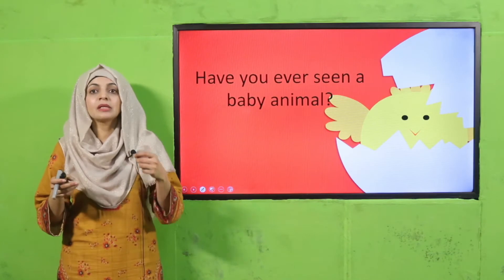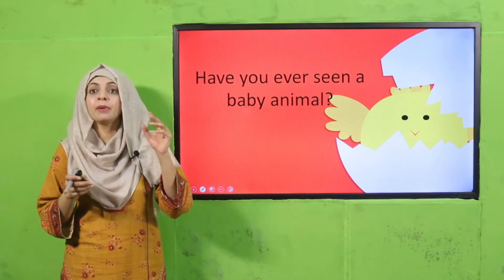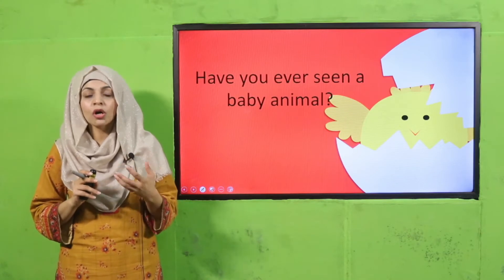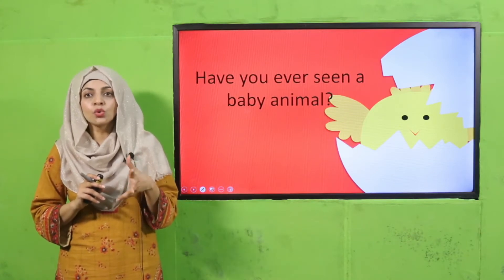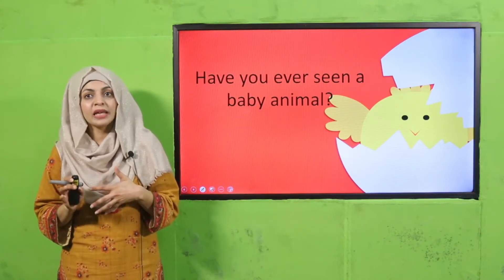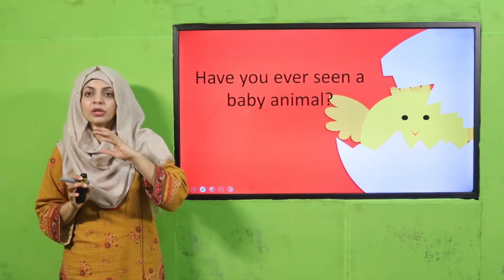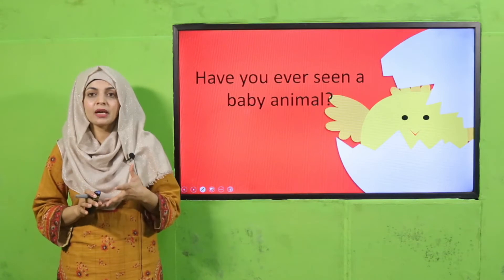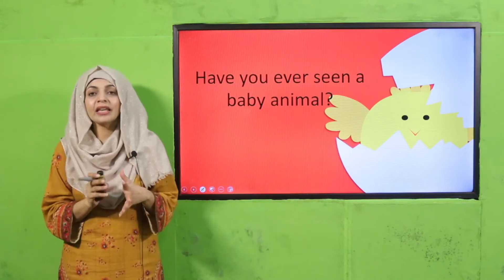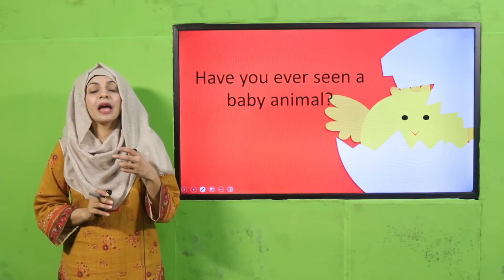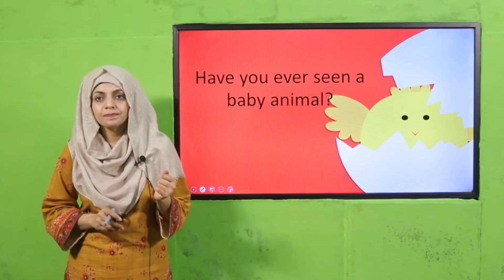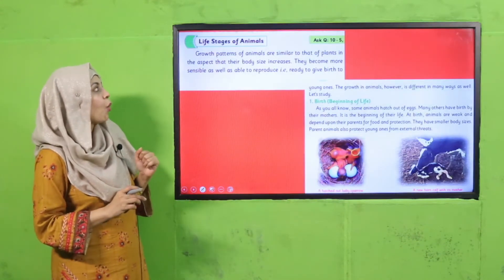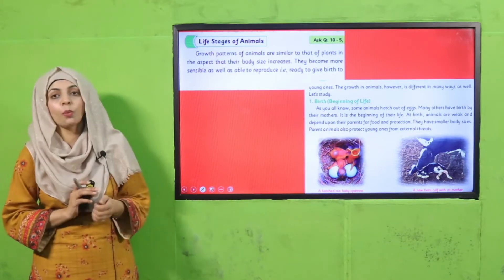Have you ever seen a baby animal? Like I have seen a chicken, I have also seen a puppy dog, and once I went to the zoo I saw lion cubs. So quickly think and tell me how many baby animals have you seen. Very good! Now, my dear students, quickly open the life stages of animals page.